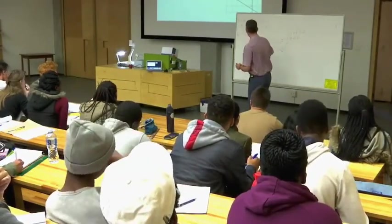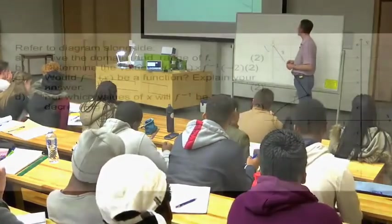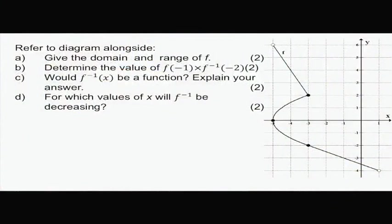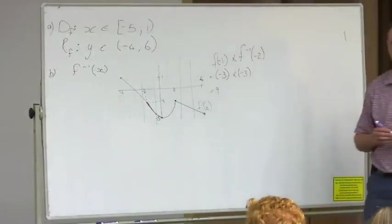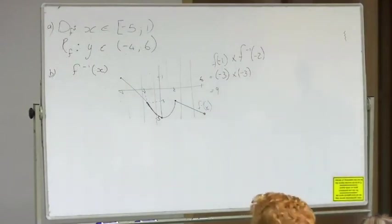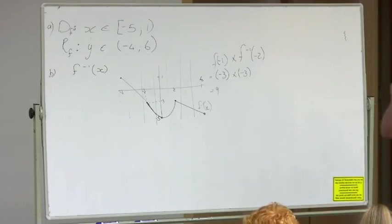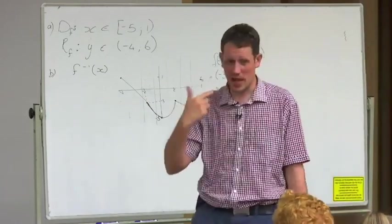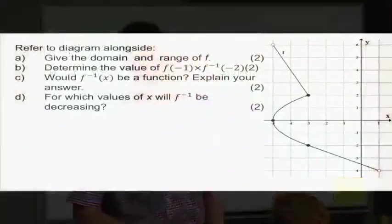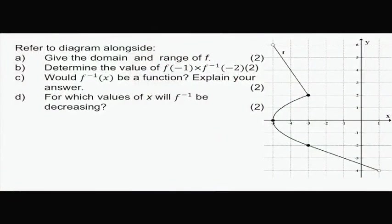Now they ask you a question: would f to the negative 1 of x, my function that I've drawn for you guys, would that be a function? How do I test for a function? By drawing a vertical line. Is there any part where my vertical line crosses my graph more than once? No. So is it a function? Yes. But now you've got to be careful, they say also explain your answer. Now you are not allowed these days anymore to say it passes the vertical line test.